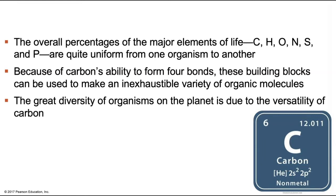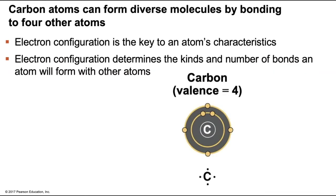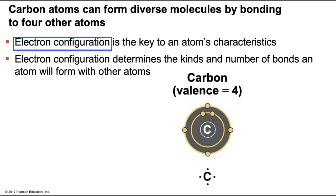So let's dive into carbon and how to build molecules. The magic of carbon is due to one thing: its ability to make four covalent bonds in the second energy level. An atom's ability to bond is solely due to its electron configuration. So in order to fully understand and appreciate carbon's bonding ability, we have to take a closer look at the subatomic level.